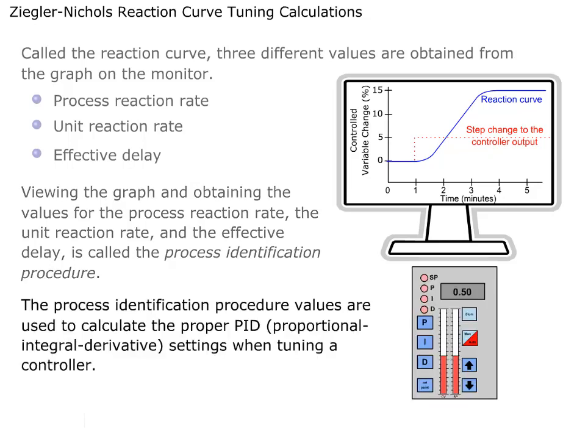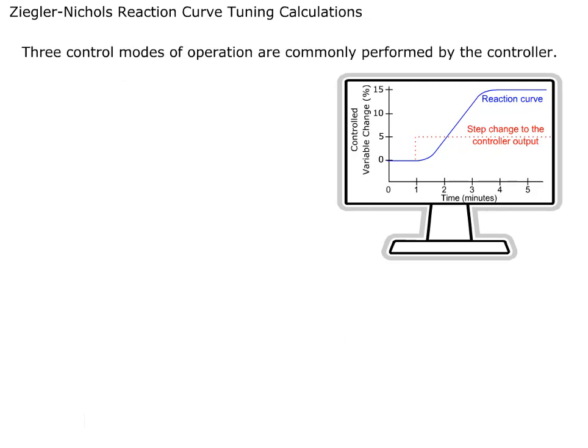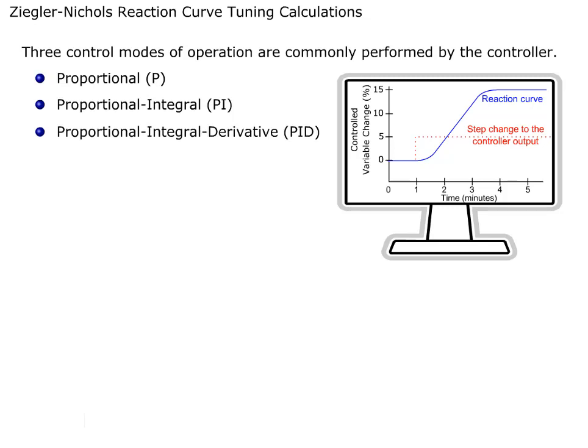The Process Identification Procedure values are used to calculate the proper PID, or Proportional Integral Derivative, settings when tuning a controller. Three control modes of operation are commonly performed by the controller. These include Proportional, or P, Proportional Integral, or PI, and Proportional Integral Derivative, or PID.